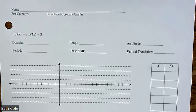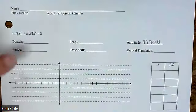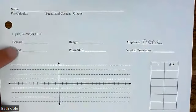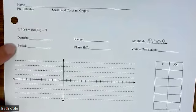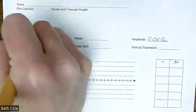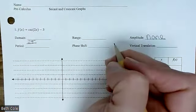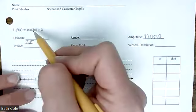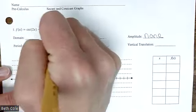What is your amplitude automatically? None — just write none. You're going to do this the same way we did sine and cosine. How did you do the period for sine and cosine? Two pi over B — the number in front of the X, which in this case is two. So what's that going to give you? Just pi.